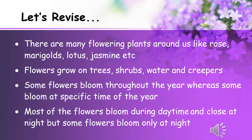Let us revise what we have learned so far. We have learned that there are different flowers with different shapes, sizes, color and fragrance. There are many flowering plants around us, like rose, marigolds, etc. Flowers grow on trees, shrubs, water and creepers. Some flowers bloom throughout the year, whereas there are some which bloom at a specific time of the year. While most flowers bloom during daytime and close at night, there are some flowers which bloom only at night, like night blooming jasmine and night queen.